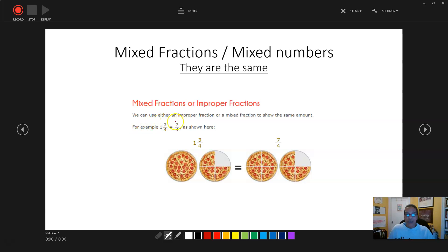We can use either an improper fraction or a mixed fraction to show the same amount. For example, one and three quarters, or one and three fourths, is the same as seven fourths, or seven quarters. Just like it is here in this pizza. So you have one whole pizza there, right here.